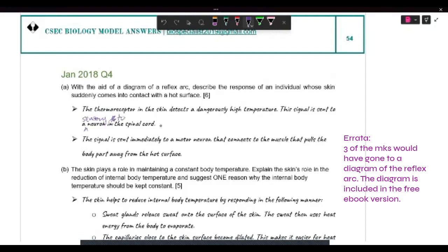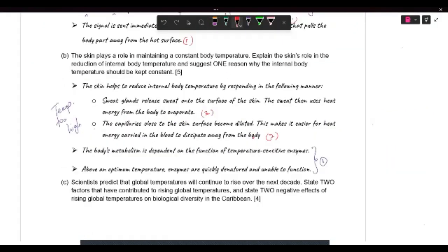Neuron to the spinal cord. There it is sent from sensory neuron to relay neuron. And then from the relay neuron, it's sent immediately to a motor neuron that would then connect to the muscle that pulls the body part away from the hot surface.